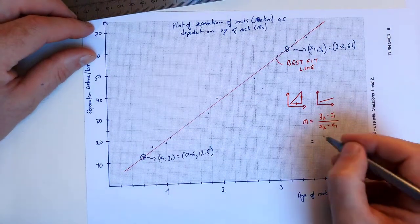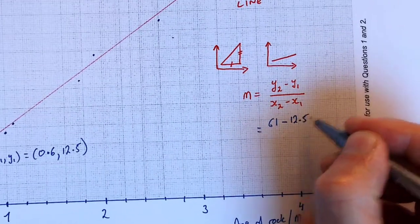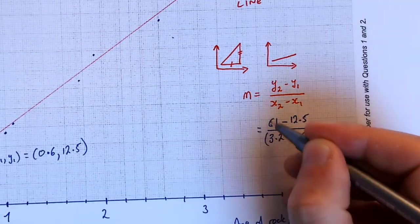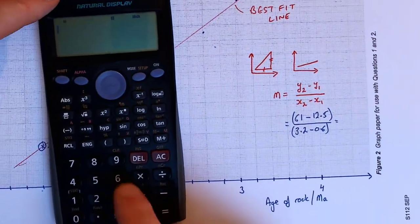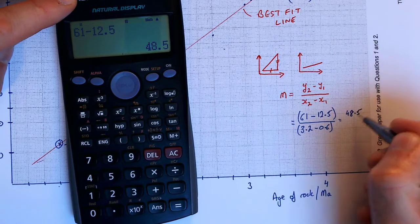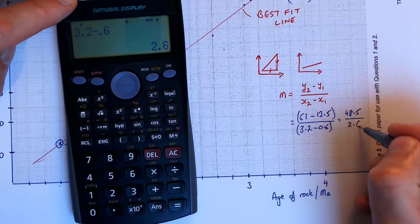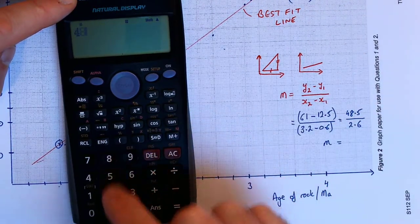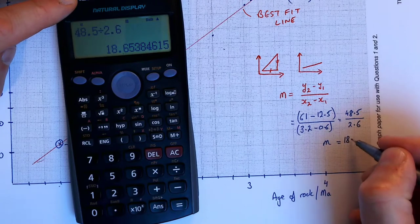So now I've got my y2, y1, x2, x1 values, I can slot them in. So 61 minus 12.5 divided by 3.2 minus 0.6. So 61 minus 12.5 gives me 48.5 upstairs, divided by 3.2 minus 0.6. So the slope m is 48.5 divided by 2.6.